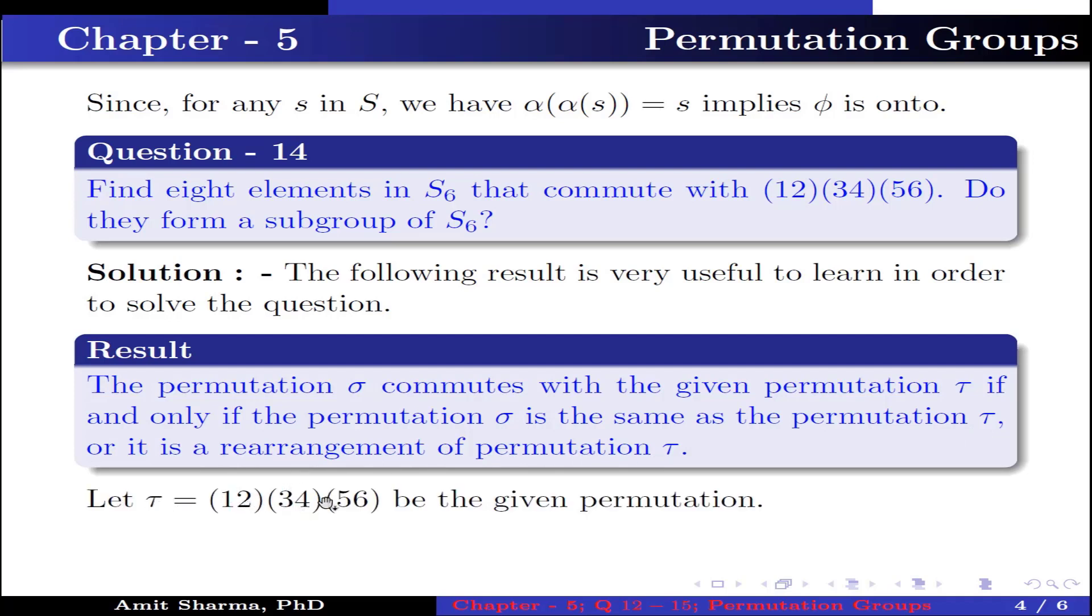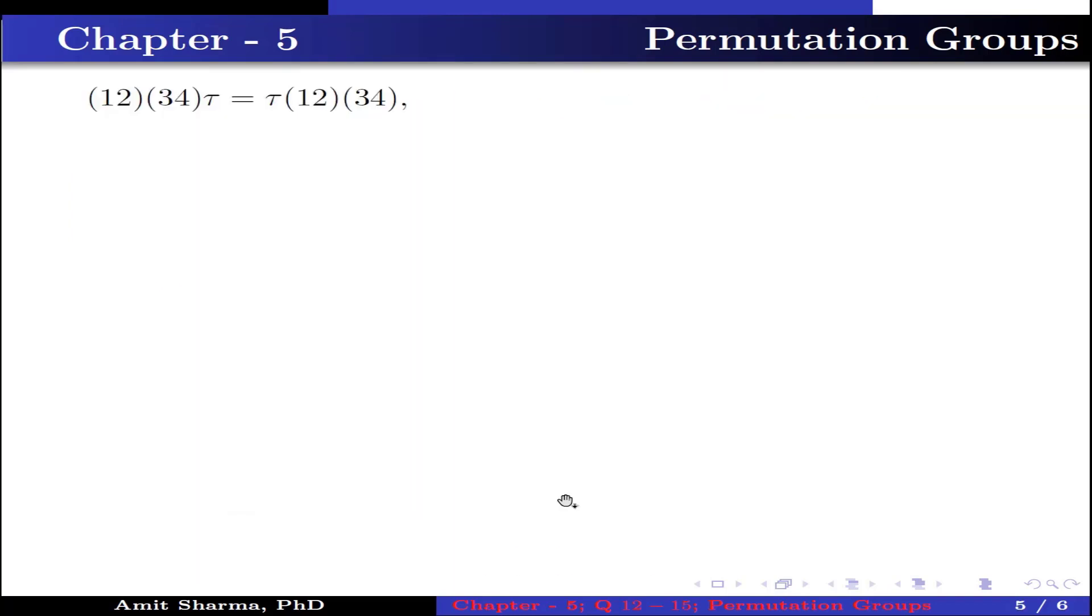Let τ = (1,2,3,4,5,6) be the given permutation. Since identity times τ equals τ times identity where identity is the identity permutation. (1,2) times τ equals τ times (1,2). We can easily check that the permutation is commutative. (3,4) times τ equals τ times (3,4). (5,6) times τ equals τ times (5,6). (1,2,3,4) times τ equals τ times (1,2,3,4).